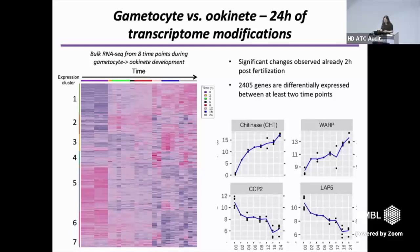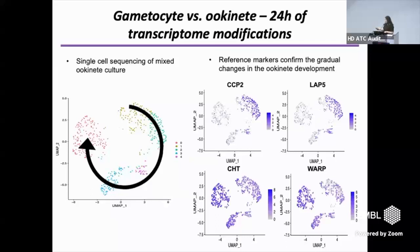We wanted to check whether the changes were due to actual gene expression changes or just variation in cell population stage composition. So we repeated the analysis using single-cell sequencing, using a mixture of cultures from different time points to generate transcriptomes of single cells. You can clearly see one starting and one ending point of a developmental trajectory, with gametocyte-specific genes present mostly in the left-hand cluster and gradually decreasing, and ookinete-specific genes starting low and reaching peak expression later.